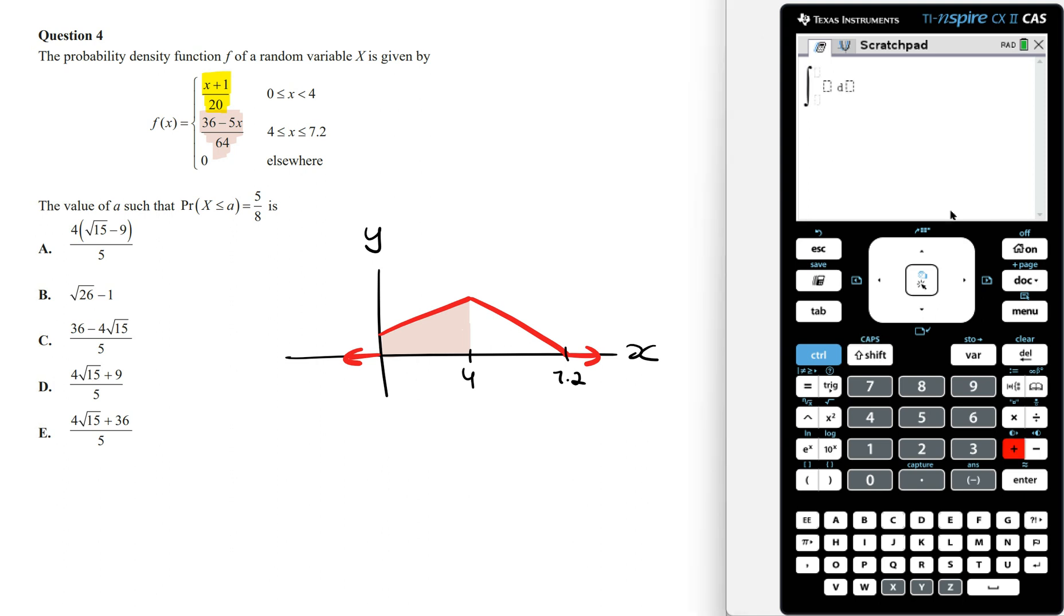Integrating x plus 1 on 20 from 0 to 4 is going to give us this area. Now we want to check whether 3 on 5 is larger than or less than 5 on 8. And so this is true and 3 on 5 is less than 5 on 8, which means that the value of a has to be larger than 4.